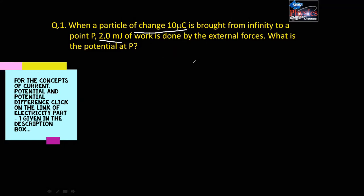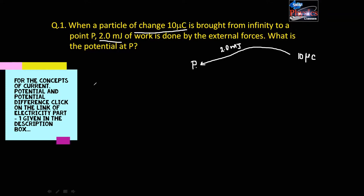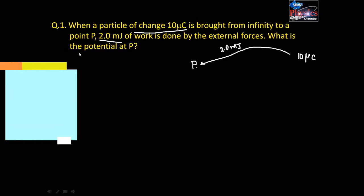So in question number 1, a 10 microcoulomb charge is being brought from infinity to a particular point P, and the work done in bringing it to point P is 2.0 milli-joules. Now we have to find out what is the potential at point P.